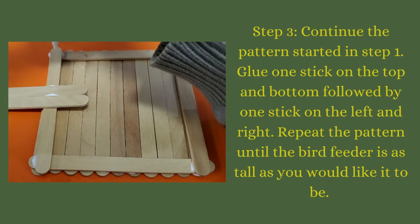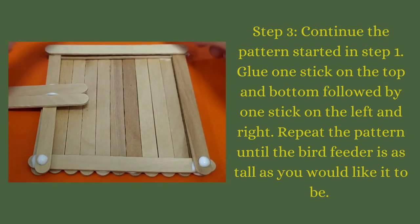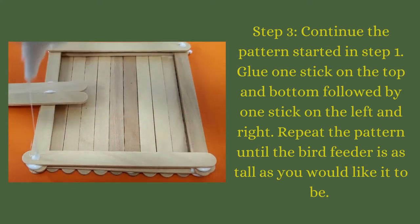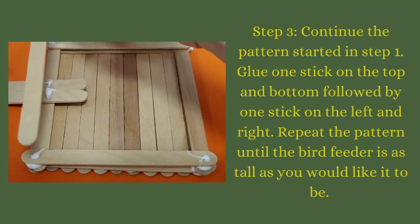After your perch is glued down you're going to continue the pattern you started in step one, gluing one stick onto the top and bottom followed by one stick on the left and right. Repeat the pattern until the bird feeder is as tall as you would like it to be.